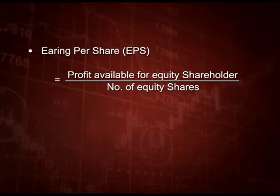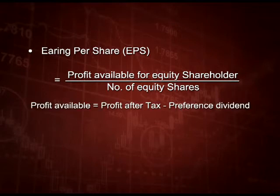How do we calculate this profit available for equity shareholders? Whatever profit after tax is available, we deduct preference dividend from that.